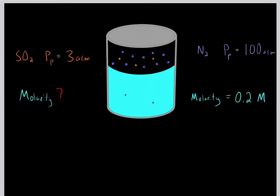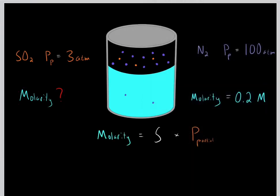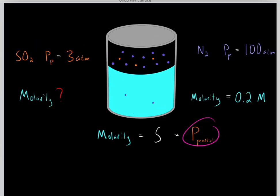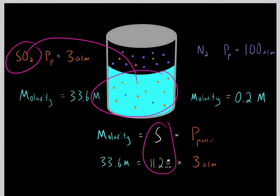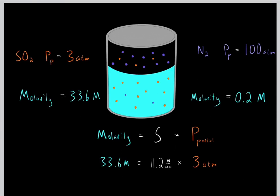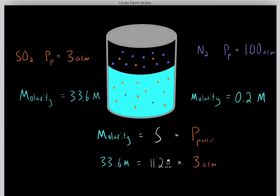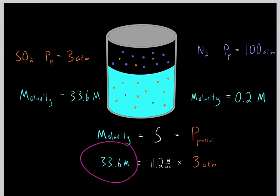Let's try another example. We have sulfur dioxide gas with a partial pressure of 3 atmospheres. What is the molarity of sulfur dioxide in this water solution? Using Henry's Law, the molarity equals the solubility constant multiplied by the partial pressure. The solubility constant for sulfur dioxide in water is 11.2 mol per atmosphere. So 3 atmospheres multiplied by 11.2 molar per atmosphere gives a molarity of 33.6 moles per liter.